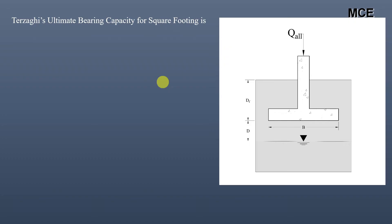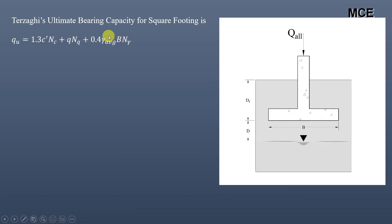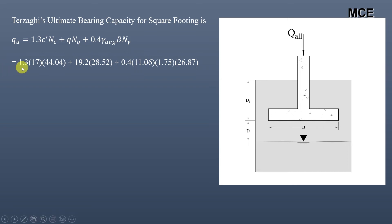Terzaghi's ultimate bearing capacity for square footing is: qu = 1.3 C' × Nc + Q × Nq + 0.4 × γ_avg × B × Nγ. We use the average unit weight in the third term since the water table is below the footing bottom but within a depth equal to the footing width. Substituting values: qu = 1.3 × 17 × 44.04 + 19.2 × 28.52 + 0.4 × 11.06 × 1.75 × 26.87 = 1728.9 kPa.